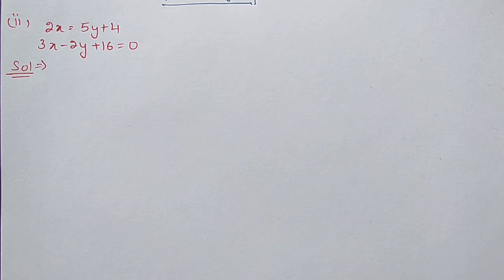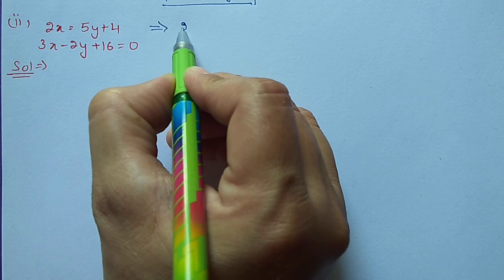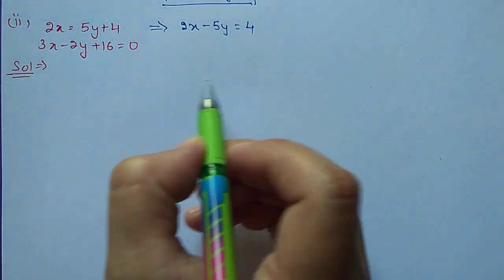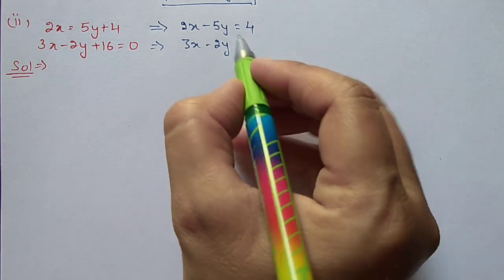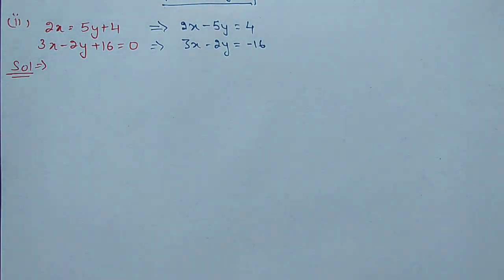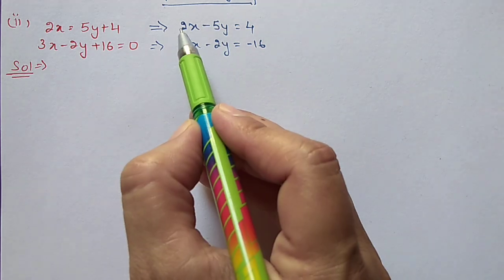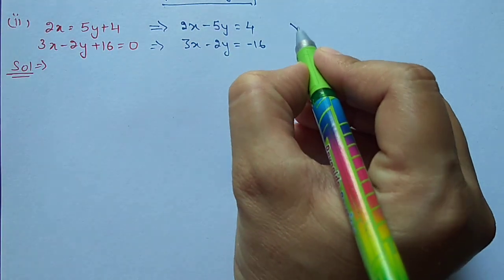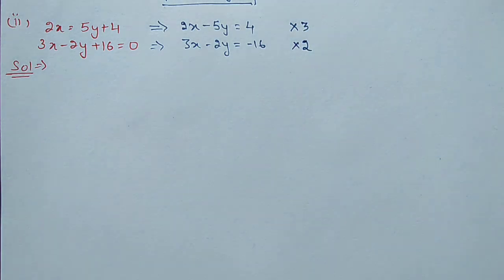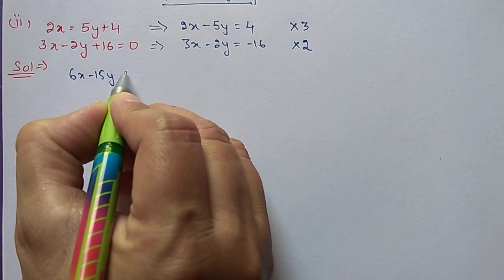Next, first question second part: 2x equal to 5y plus 4, and 3x minus 2y plus 16 equal to 0. First we will change the form of these equations. First equation we can write as 2x minus 5y equal to 4, and the second equation we can write as 3x minus 2y equal to minus 16. Now we have to make any one variable the same. If we try to make x the same, here it is 2 and here it is 3. The LCM of 2 and 3 is 6. So we multiply the first equation by 3 and the second by 2. After multiplication we get 6x minus 15y equal to 12.